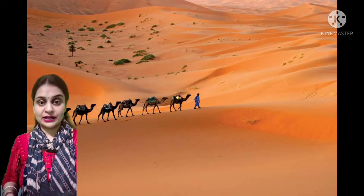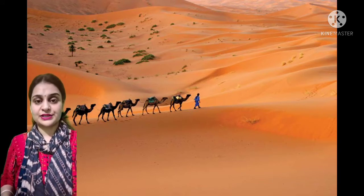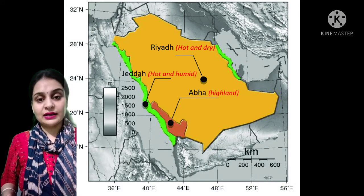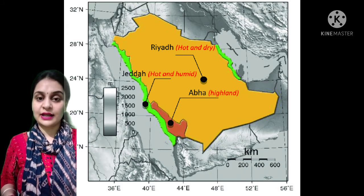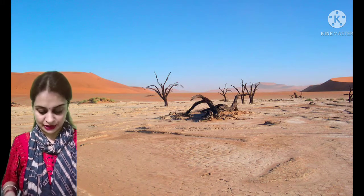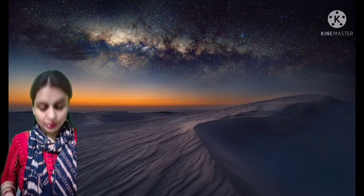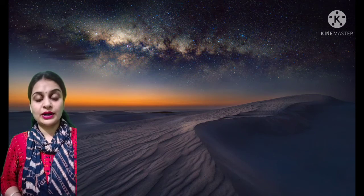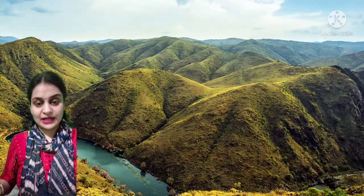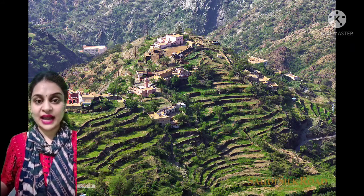Now talking about the climatic conditions of Saudi Arabia. As the Tropic of Cancer passes through it, the temperature of Saudi Arabia is very hot and arid. The rays of the sun fall directly on this area, leading to very high temperatures. The daytime temperature is very high but nights are pleasant. The highest summer temperature recorded in Saudi Arabia is above 50 degrees Celsius. The region has small hills of sand called sand dunes.